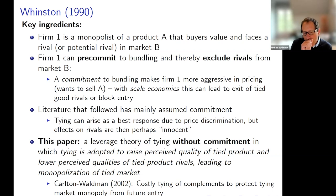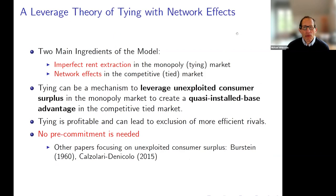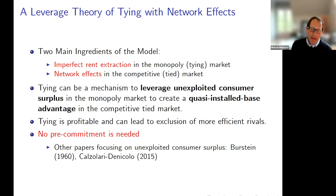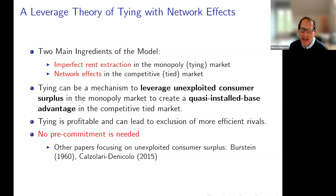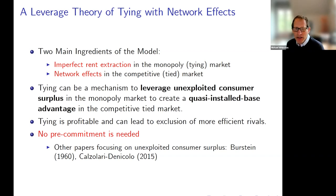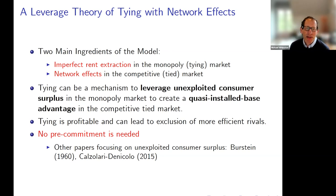So what are the main ingredients of the model? The main ingredients are twofold. One is that there's going to be imperfect rent extraction in the tying market — you have a monopoly in the tying market but you don't know everything about willingness to pay, and as a result there are information rents that consumers in the tying market have. The second piece is there are going to be, as I said, network effects in the competitive or oligopolistic tied market.